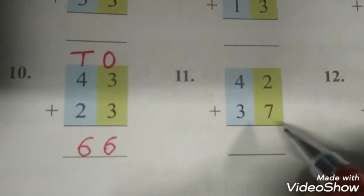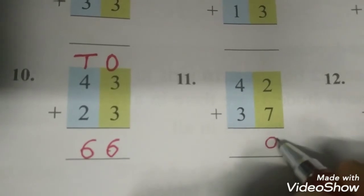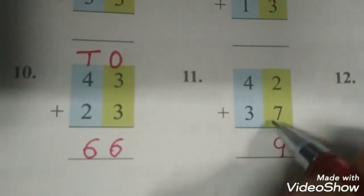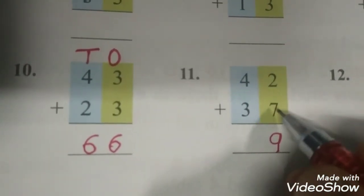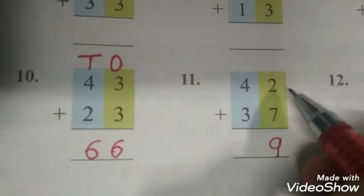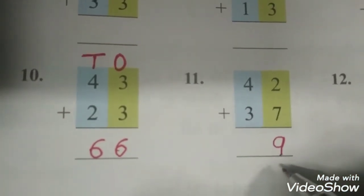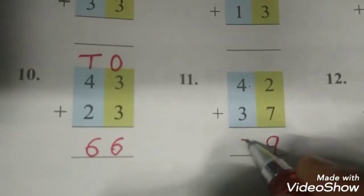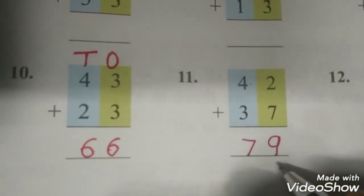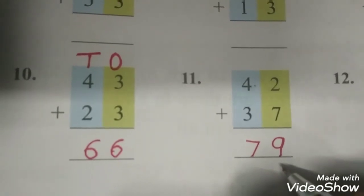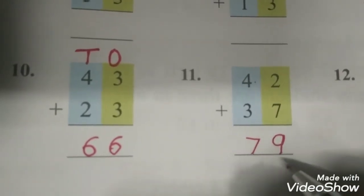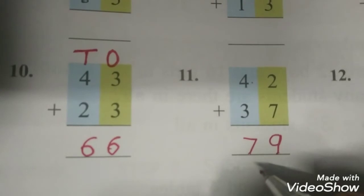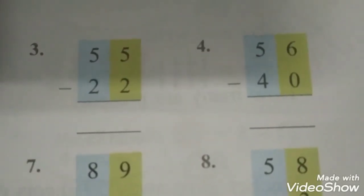Sabse pehle ones ko hi aap karenge. Pehle tens ko karke nahi start karenge. Always start with ones. 2 plus 7, answer will be 9. Kaise plus kiya? Keep 7 in mind, 7 is the bigger number, keep it in mind, add 2 more: 8, 9. Again 4 plus 3, 7. So my answer is 79. Like? So you can do that. Now you are all able to do 2-digit addition.